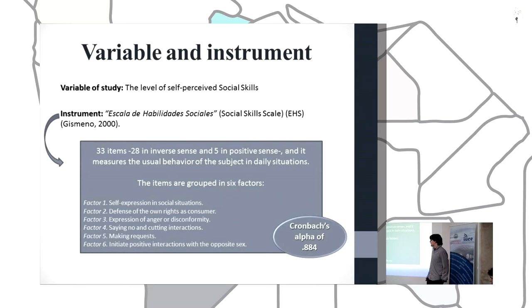The items are grouped in six factors. Factor 1 makes reference to self-expression in social situations. Factor 2 to the defense of the own rights as consumer. Factor 3 to the expression of anger or discomfort. Factor 4 is saying no and cutting interactions. Factor 5 is making requests. Factor 6 is to initiate positive interactions with the opposite sex. This instrument has a Cronbach's alpha of 0.884.